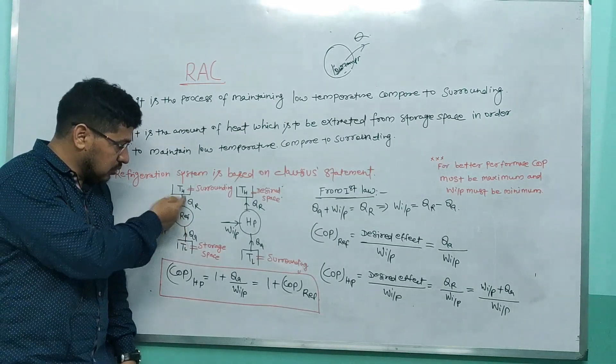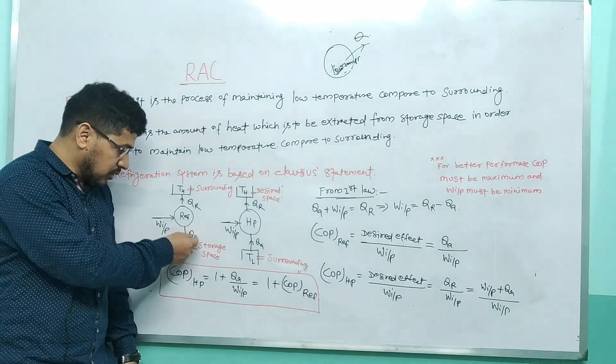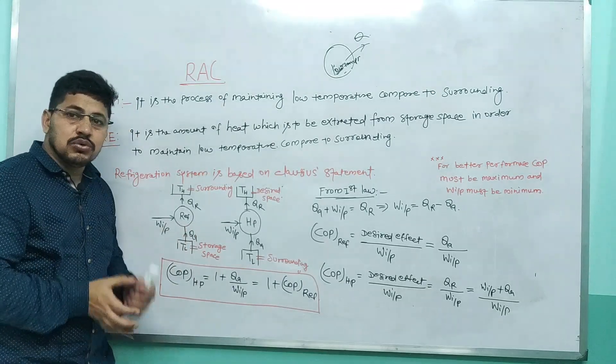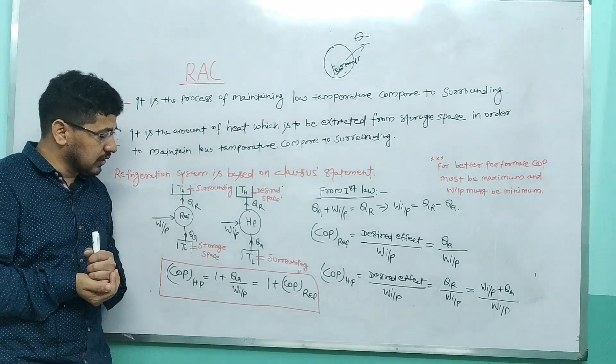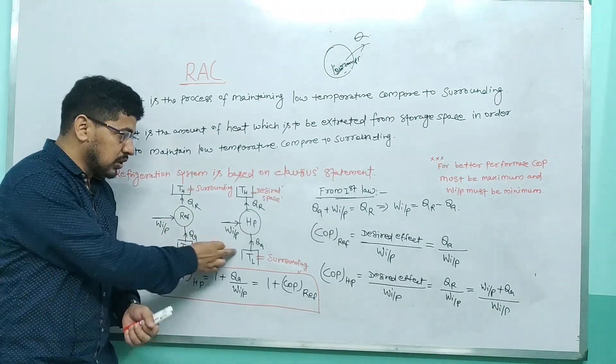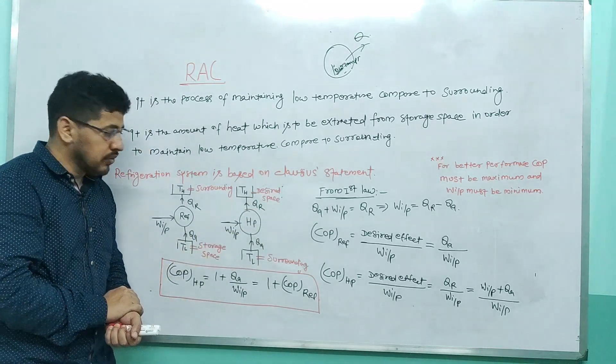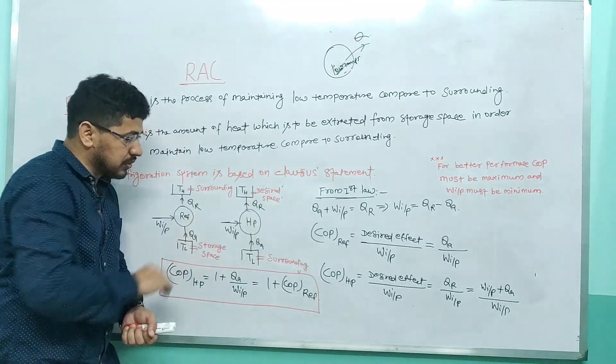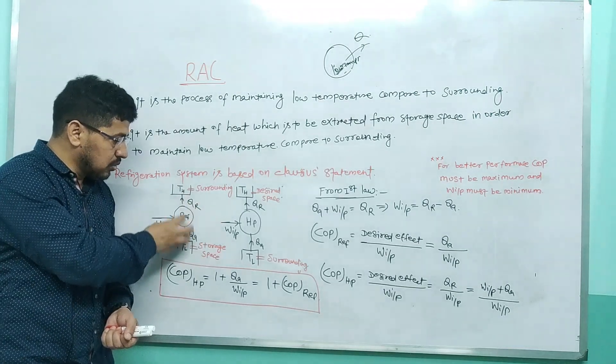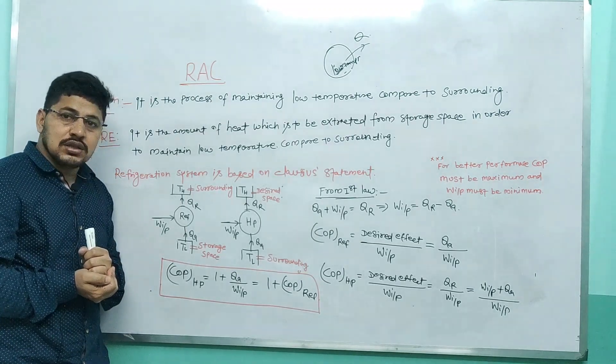In refrigeration system, we need to transfer heat from low temperature to higher temperature, but our aim is to maintain low temperature with respect to surrounding. To maintain low temperature, we have to reject the amount of heat QR. This system which transfers heat from low temperature to high temperature, we call reverse heat engine, because heat flows in reverse direction.